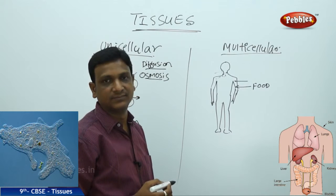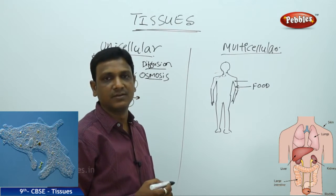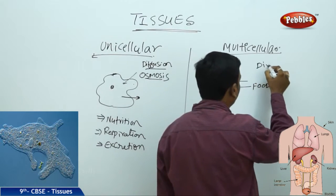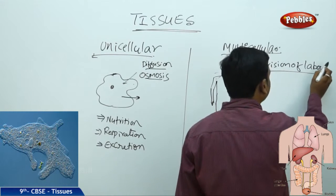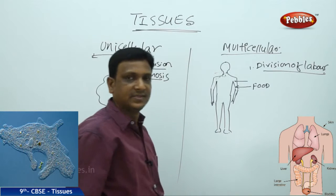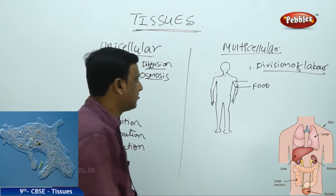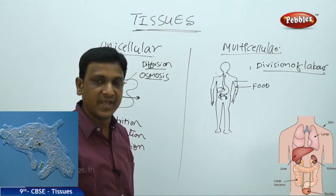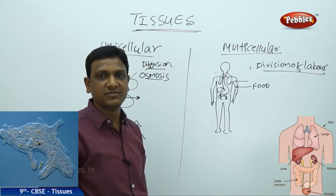In multicellular organisms, all the cells do not take up a single function. The jobs or tasks are divided among groups of cells — which we call division of labor. All cells do not take up all the functions; the cells are specialized to perform some specific functions. For example, the cells present in the digestive system take up the function of digestion. The cells that make up the respiratory system take up the function of respiration and the collection and excretion of gases.